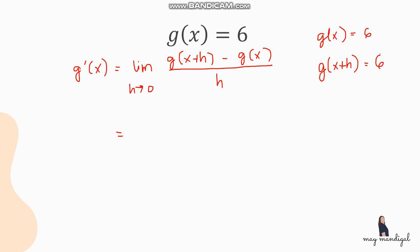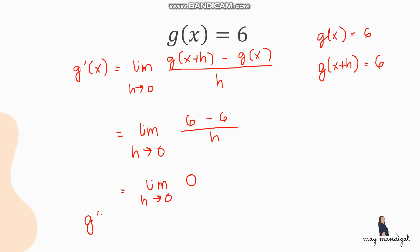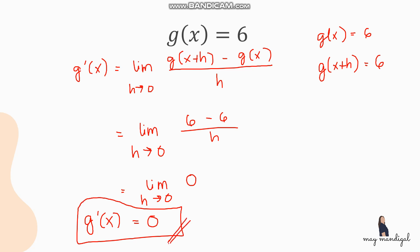We cannot replace anything because there's no variable, so g of x plus h is simply 6. Substituting: limit of 6 minus 6, all over h as h approaches 0, which gives limit of 0 over h, or just 0. The limit of 0 as h approaches 0 is 0, since the limit of a constant is the constant itself. So the derivative of the constant function is 0.